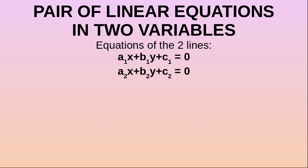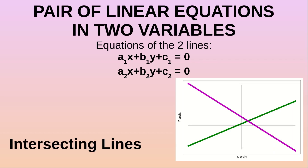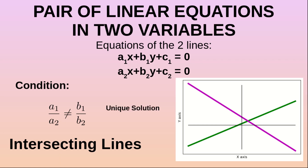Suppose the equations of two lines are A1x plus B1y plus C1 equals 0, and A2x plus B2y plus C2 equals 0. In the case of intersecting lines, the condition is A1 by A2 is not equal to B1 by B2. Here we will have a unique solution, because both lines intersect at a particular point — meaning just one single point satisfies the equations of both lines.